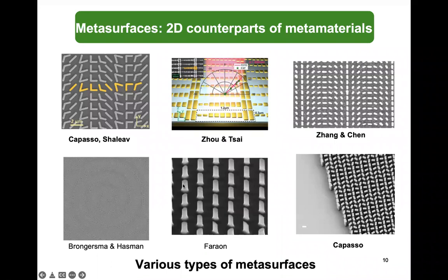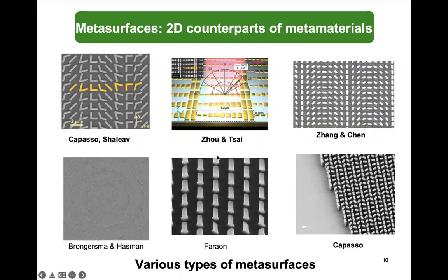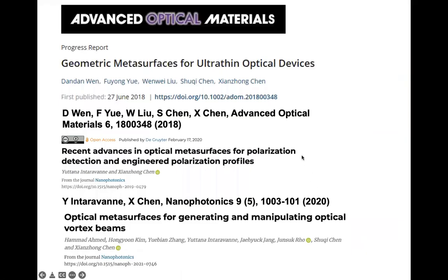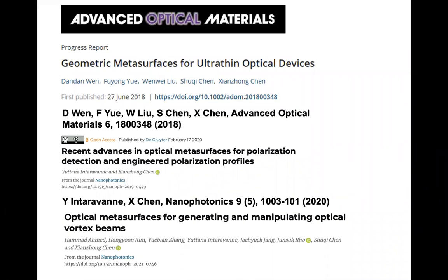In the last 10 years, there are many types of metasurfaces. The first version, from Professor Capasso's group and Professor Shalaev's group, used V-shaped structures. Later on, other types of metasurfaces came along. Since I worked at the University of Birmingham in Professor Shalaev's group, we used metallic nanorods. Later on, I used dielectric nanopillars, which are much easier for fabrication. I have also prepared several review papers on the recent progress in optical metasurfaces and plasmonic optical devices.